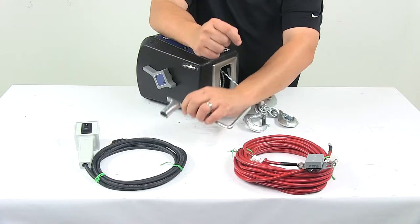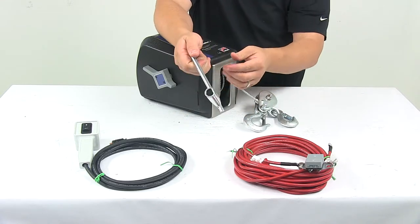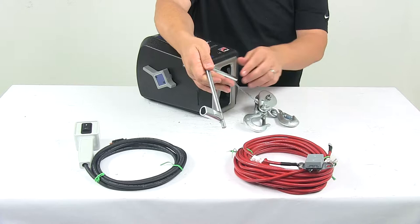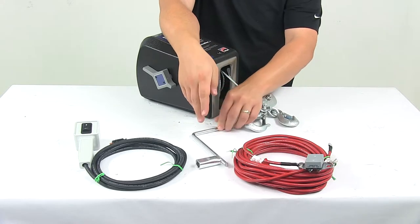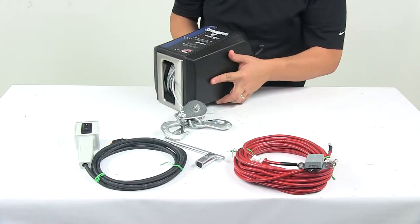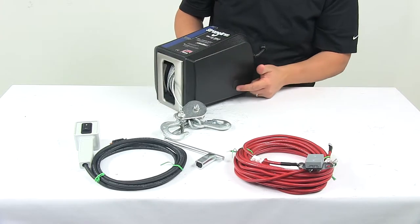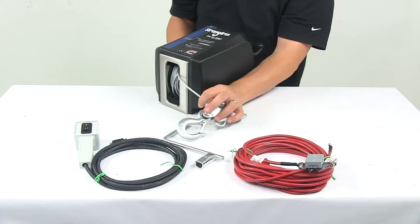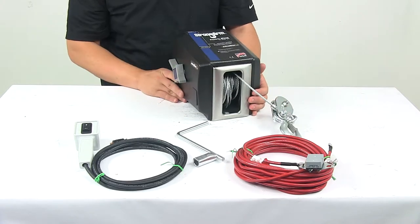It also comes with an emergency crank handle that comes standard, and it is designed for use in the event of power failure. The area where you insert that is located right here on the side. You remove this plug to gain access to the connection point for that manual crank handle.